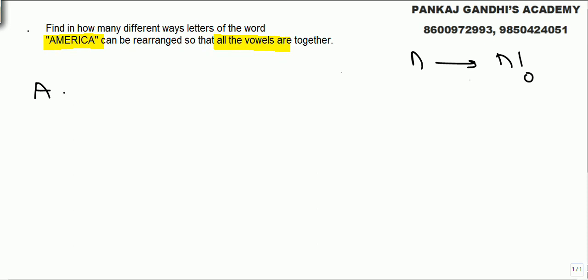How many vowels do we have? There is A, E, I, and A. They compulsorily should be together. So what we are left with is R, C, and M.